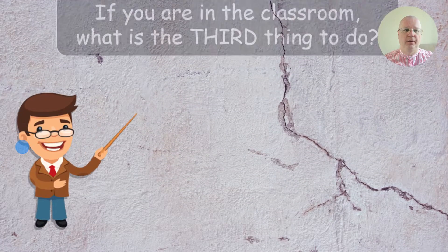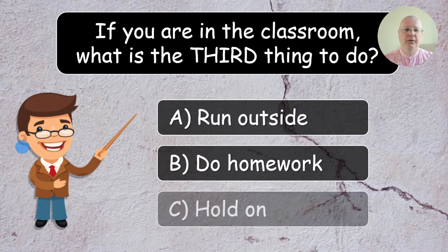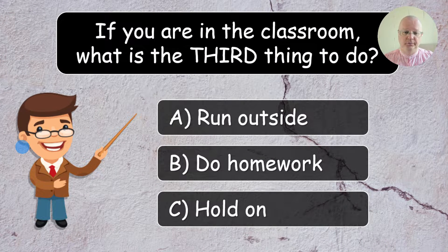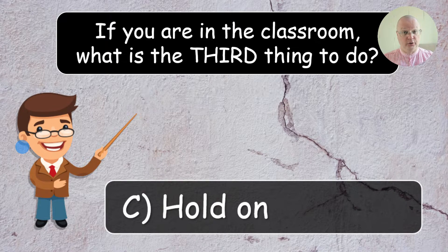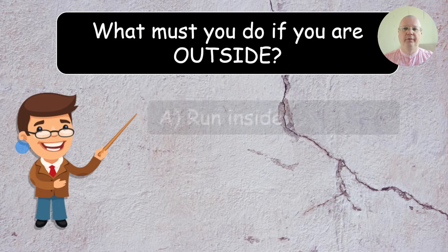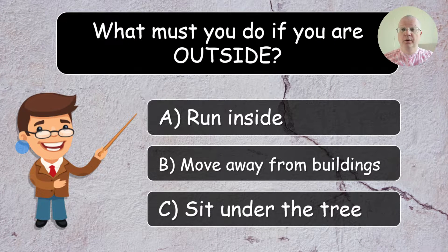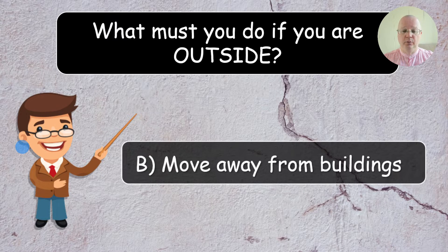Question number three: if you are in the classroom, what is the third thing to do? The correct answer is: hold on. Question number four: what must you do if you are outside? The correct answer is B — move away from buildings.